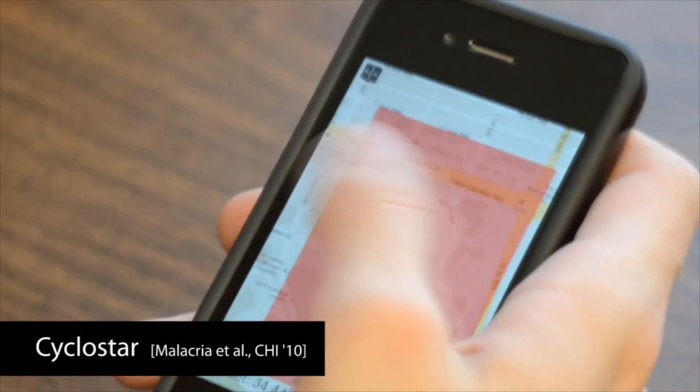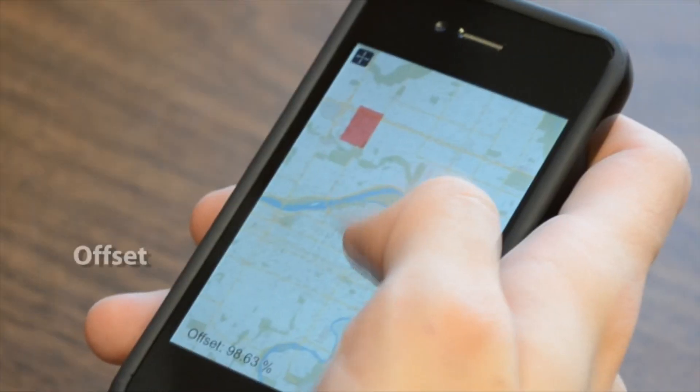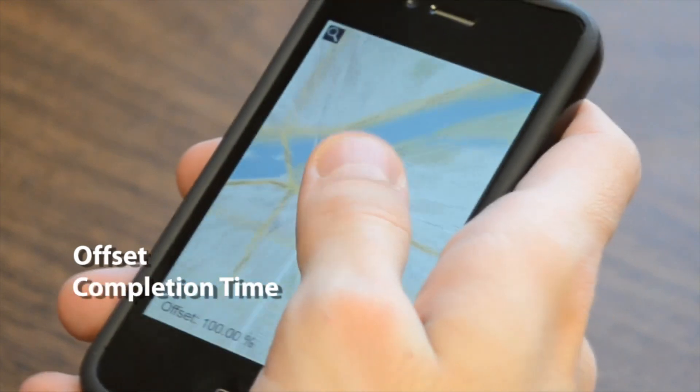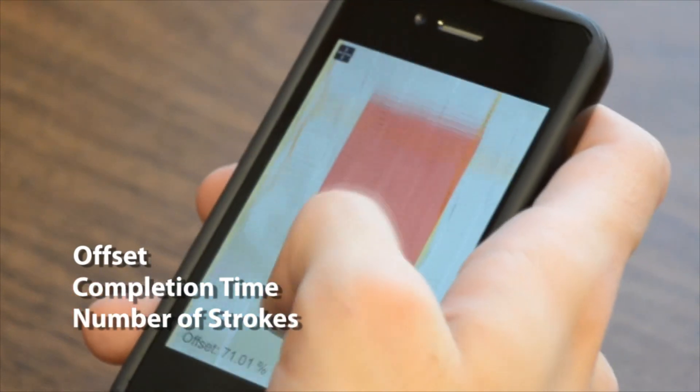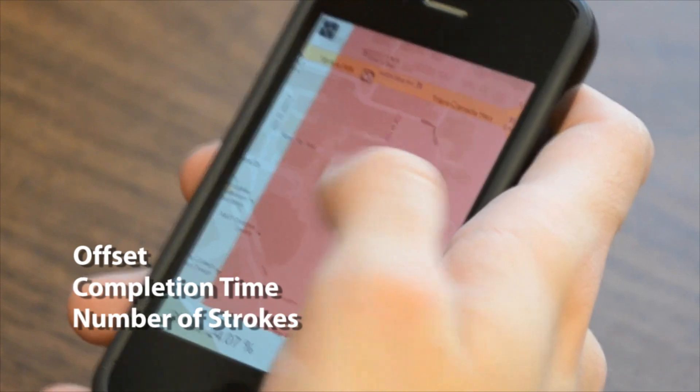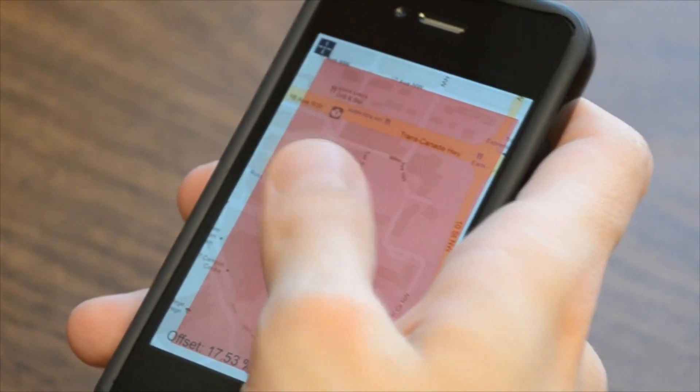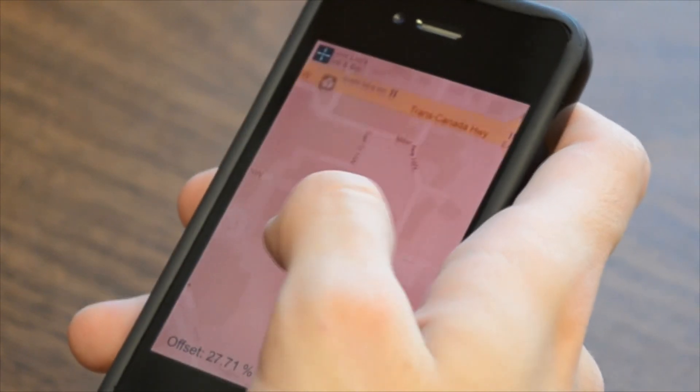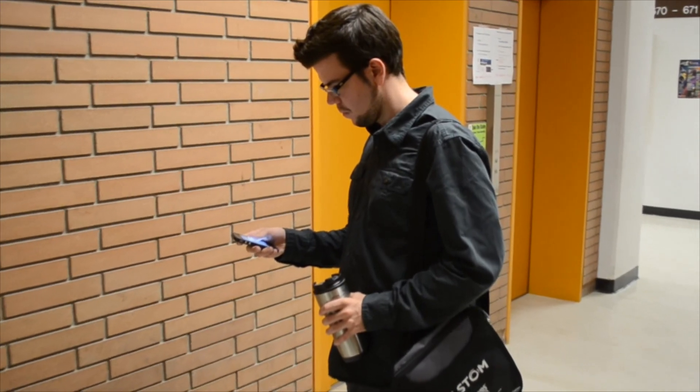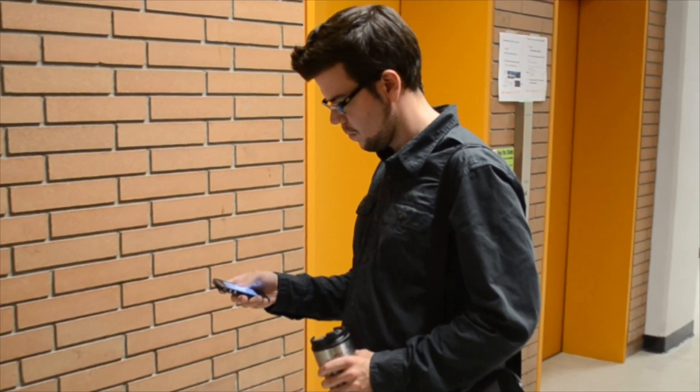We compared offset, completion time, and number of strokes in an area matching and alignment task. Results showed that fat thumb outperforms the other techniques in terms of offset. Fat thumb also had the least number of strokes and was identified as the most comfortable technique to use.